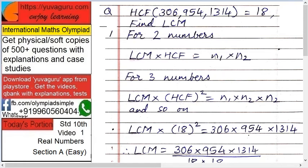LCM × HCF = N1 × N2. For three numbers, LCM × HCF² = N1 × N2 × N3. For four numbers, LCM × HCF³ = N1 × N2 × N3 × N4.